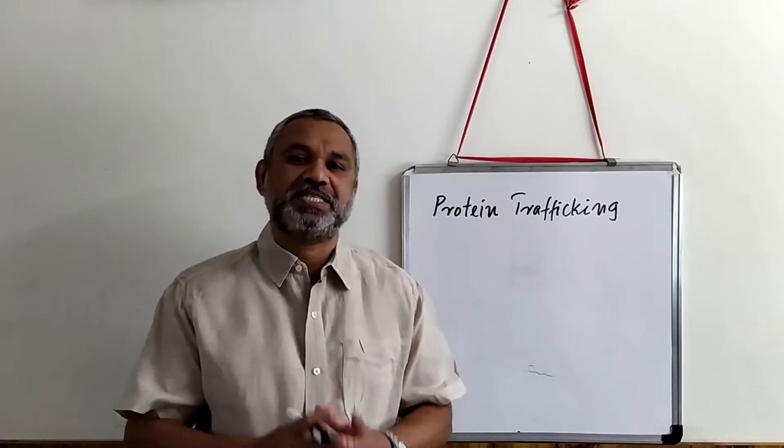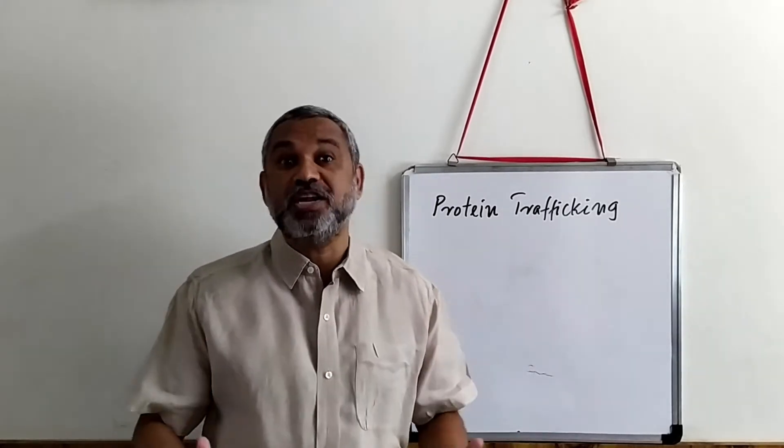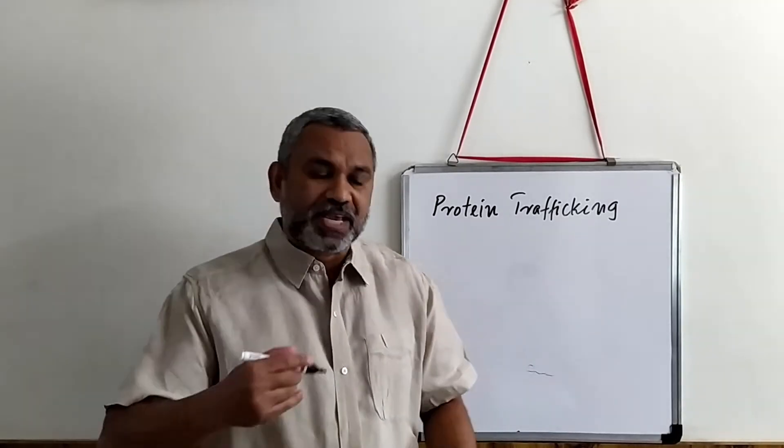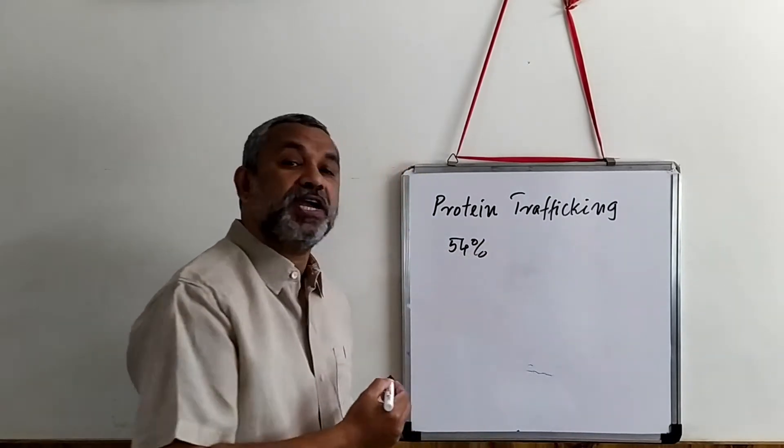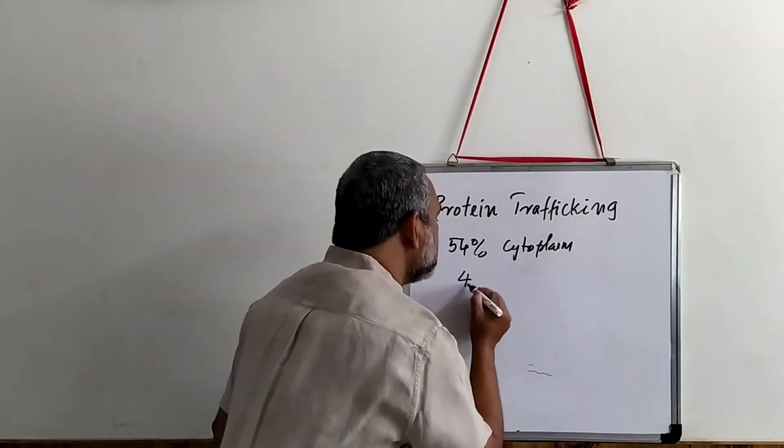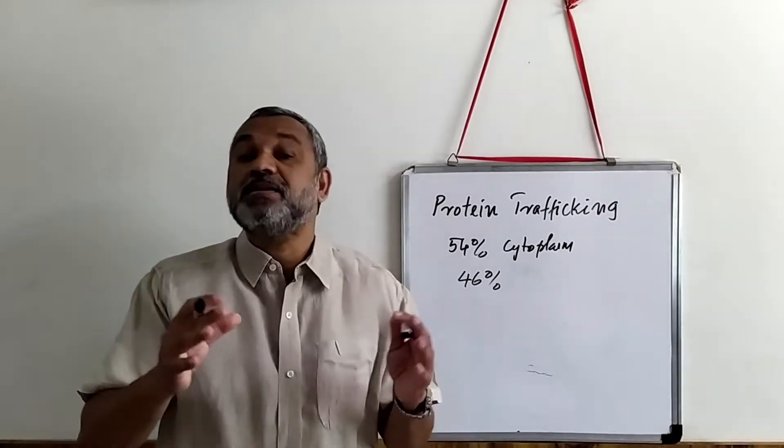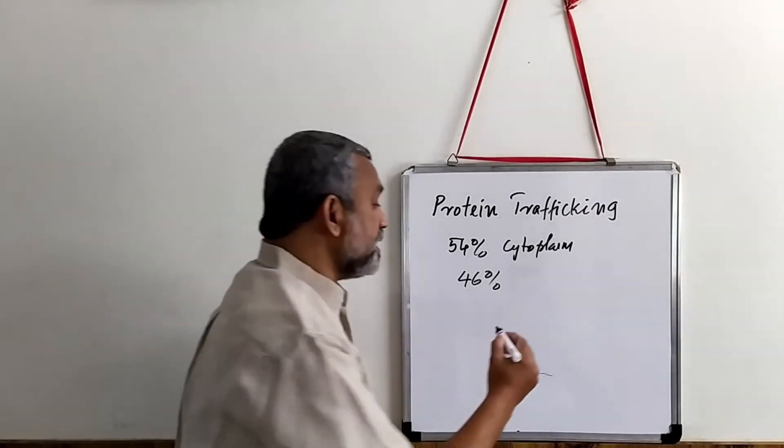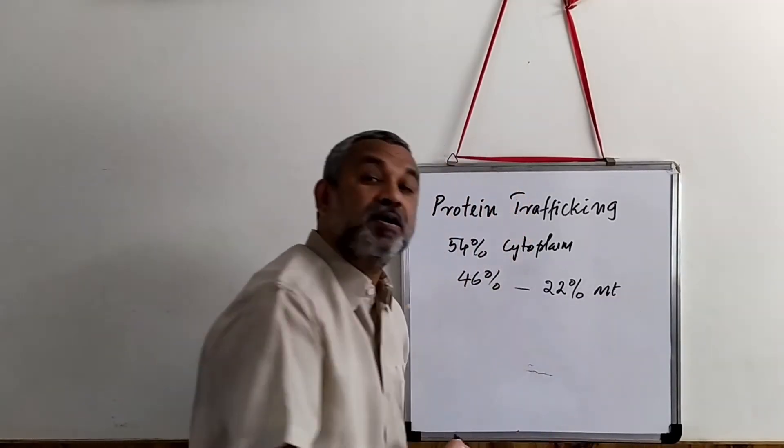If you look at eukaryotic cell, more than half of the cell volume is in the intracellular compartments. For example, about 54% is occupied by cytoplasm. In the remaining 46%, they are all trapped in intracellular compartments. For example, out of this 46%, 22% itself is occupied by mitochondria.